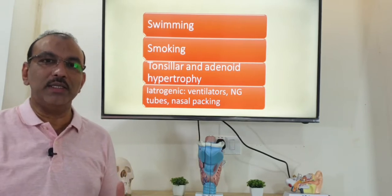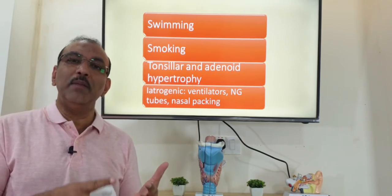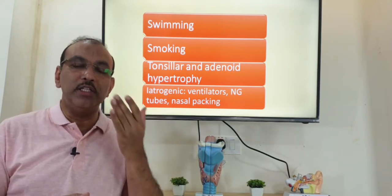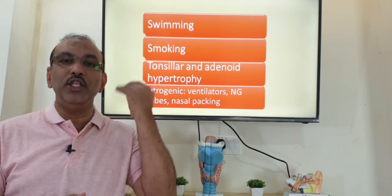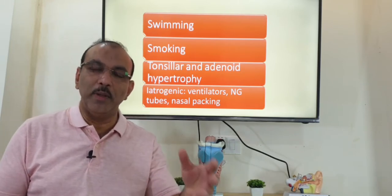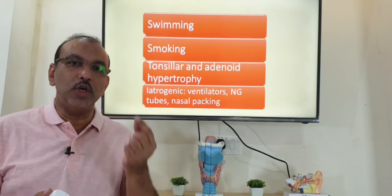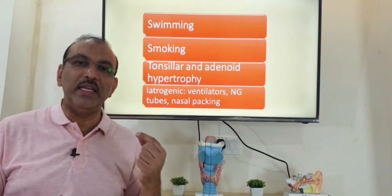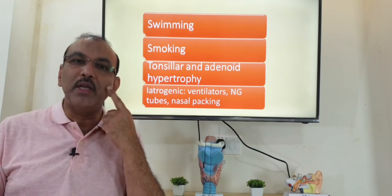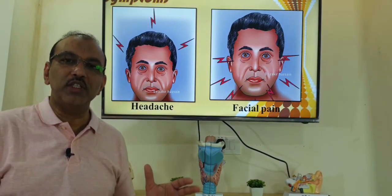Chronic rhinosinusitis can also be predisposed by swimming, smoking, and recurrent tonsillitis or adenoids — tissue seen behind the nose in the nasopharynx. If there is obstruction there, chances of getting sinusitis are more. And when a patient is admitted in the hospital on a mechanical ventilator or has a nasogastric tube inserted, the side where the tube is inserted can develop sinusitis. These are the predisposing factors for sinusitis.